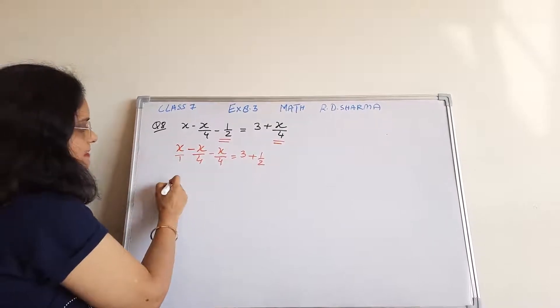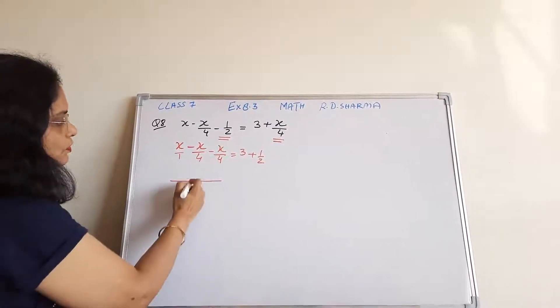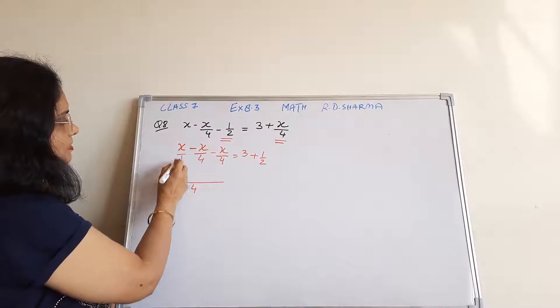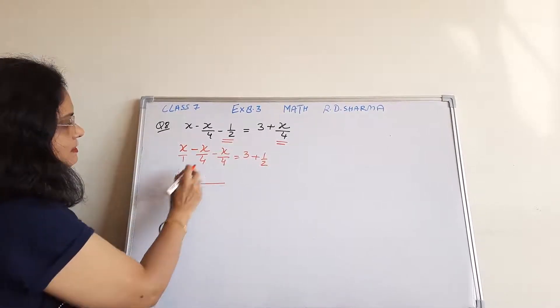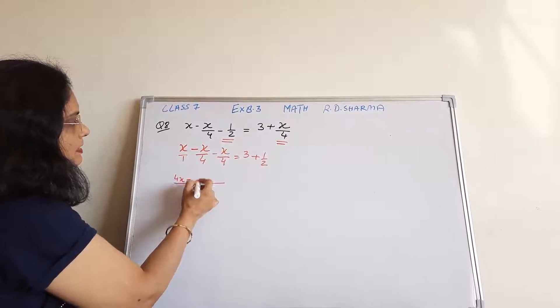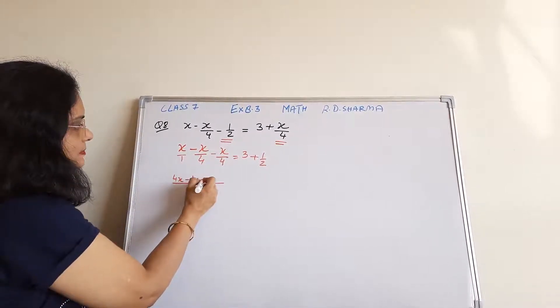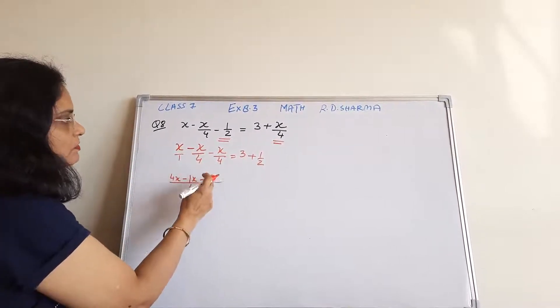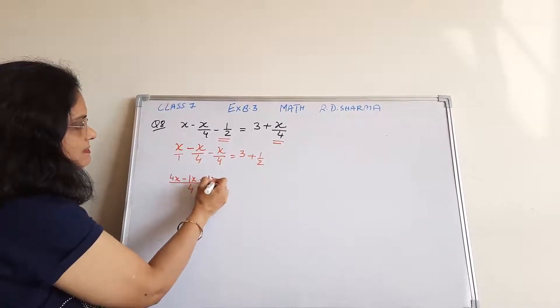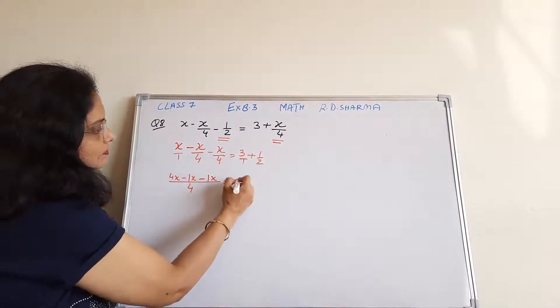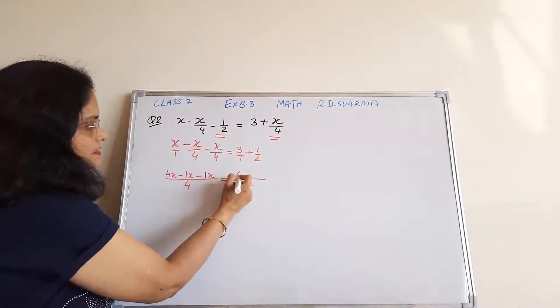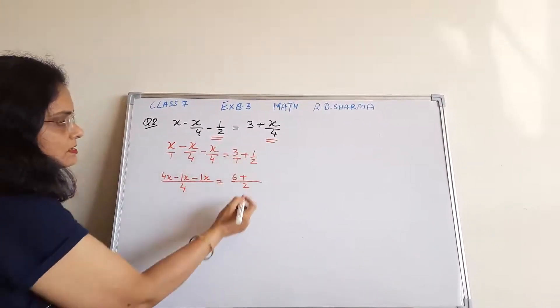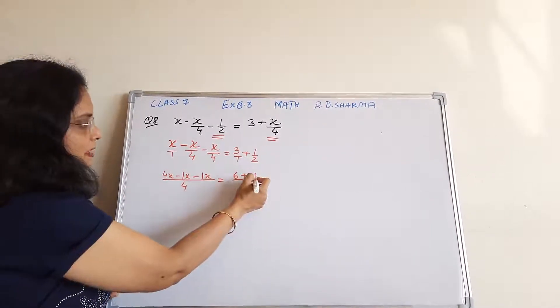Now we will take the LCM. Here the LCM is 4. So this becomes 4x minus x minus x is equal to... Here the LCM is 2. 2 times 3 is 6 plus 2 times 1 is 2, so 6 plus 1.